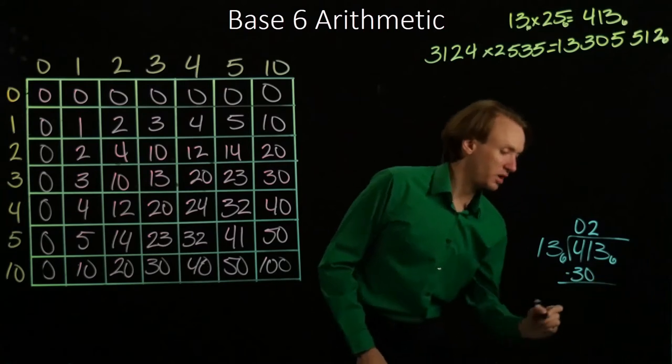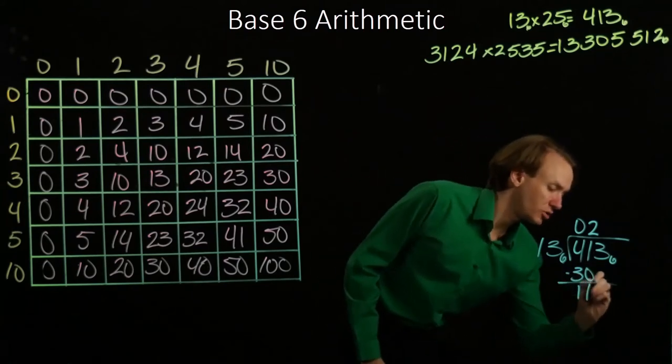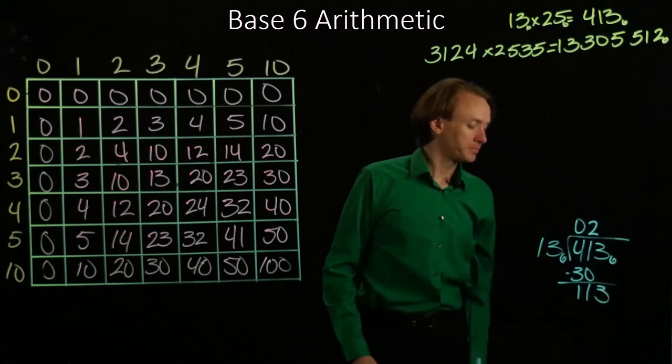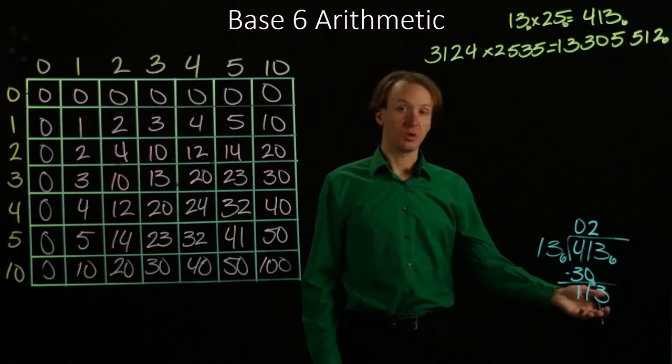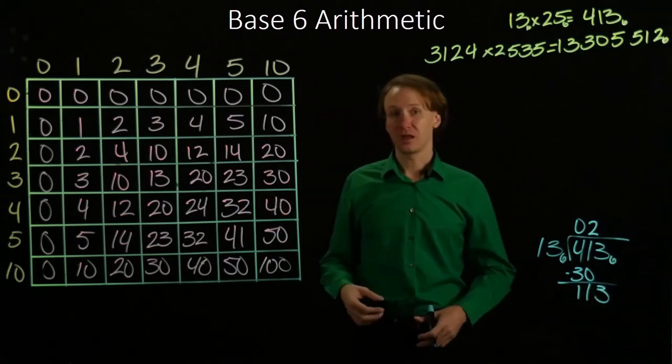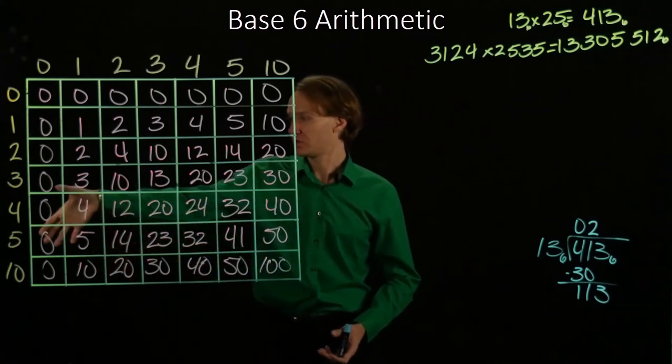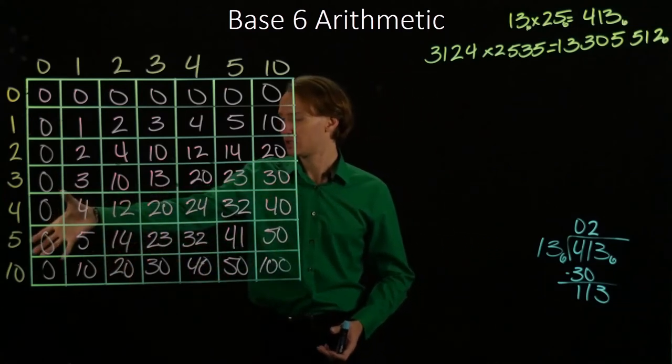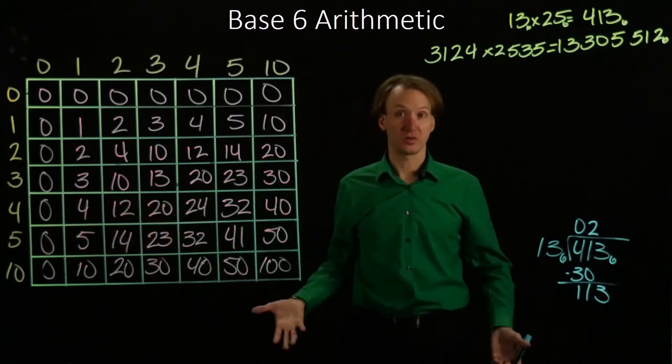So I'll subtract 30. That will leave me with 11, and then I'd bring down the 3. Now I need to know how many times 13 goes into 113. I can look at my table over here, and if this works out nicely, I should be able to add value in the 3's row to the same value in the 10's row, and get those to be equal to 113.